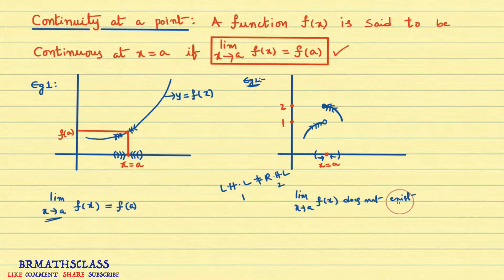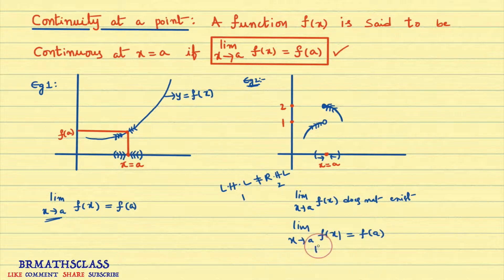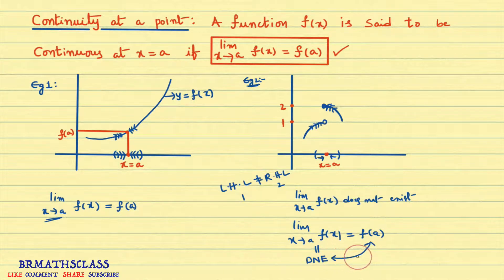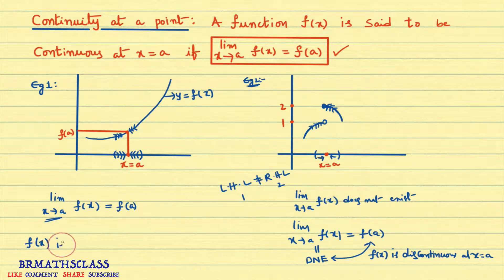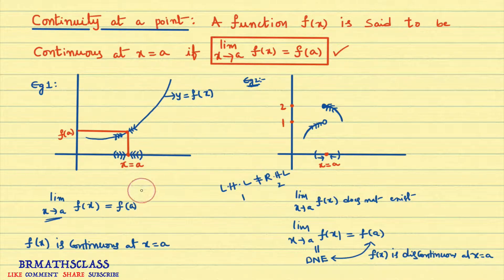Limit x tends to a of f(x) does not exist. The condition for continuity is: limit x tends to a of f(x) equals f(a). But since the limit does not exist, we cannot check whether this value and f(a) are equal. Therefore, we say that in example 2, f(x) is discontinuous — f(x) is discontinuous at x equal to a. We will try to understand this more clearly with two more examples.